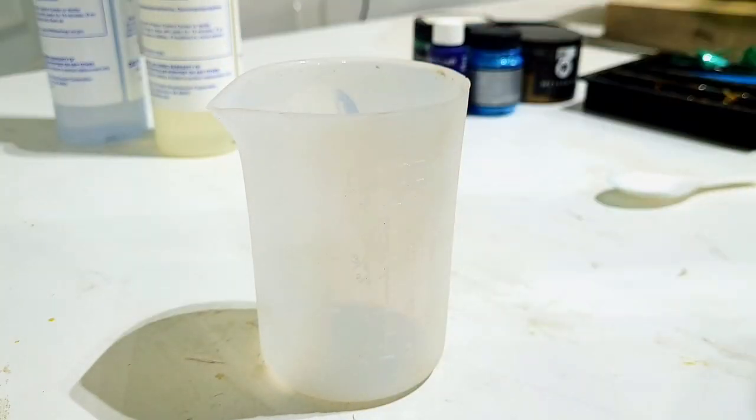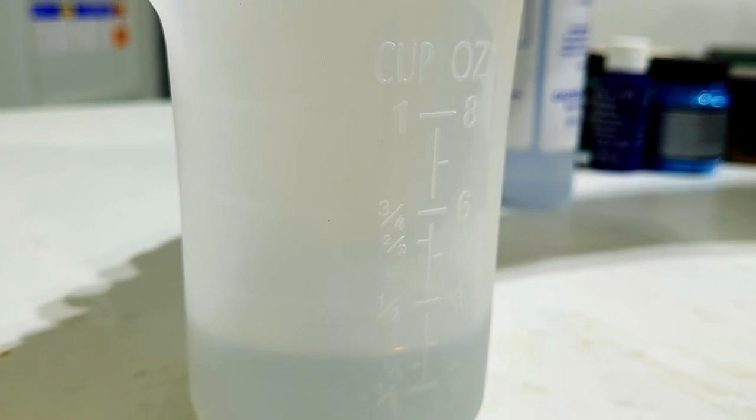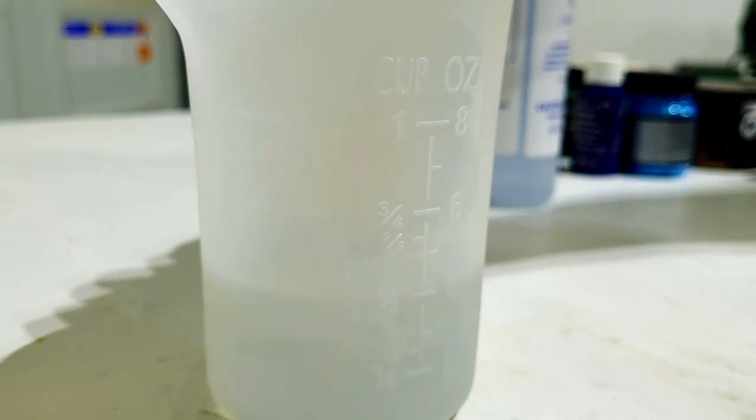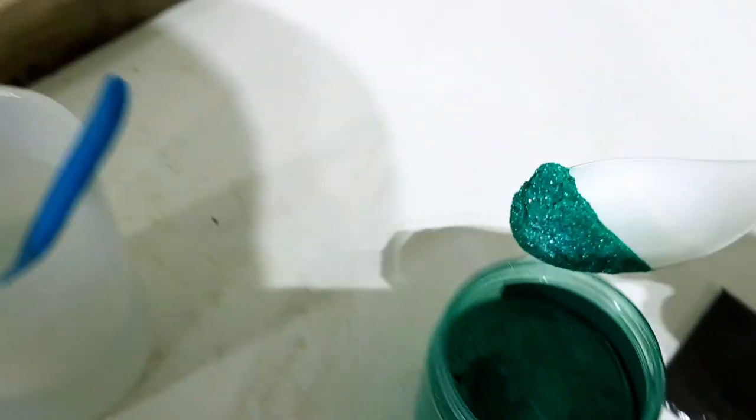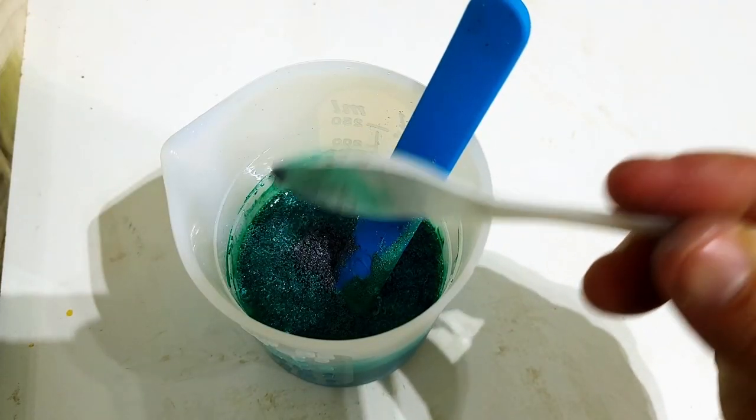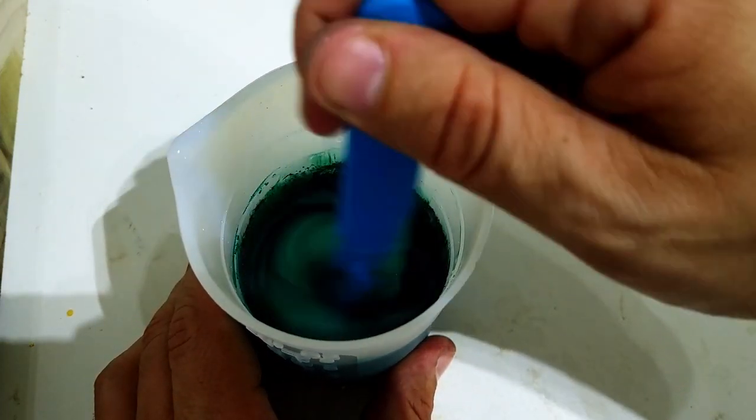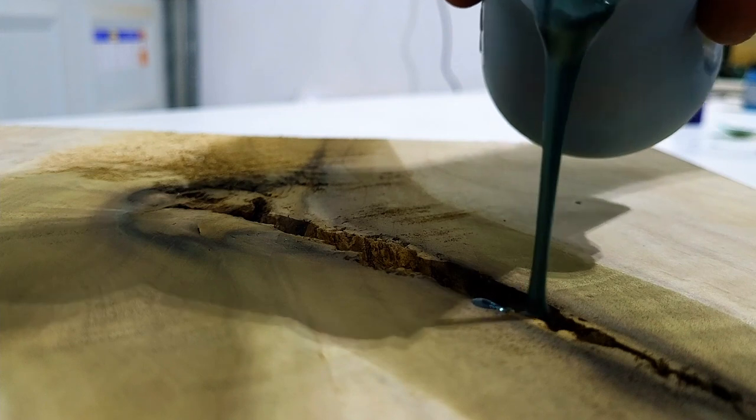Then I mixed up the epoxy that will fill the void. I decided to make a custom color using Okinawan green and battleship gray. This way it will be unique to this piece and also darker than the natural green color of the wood, so they both will be able to shine.